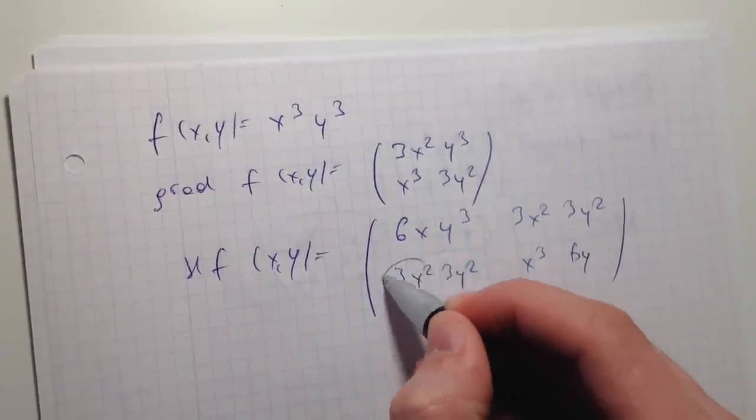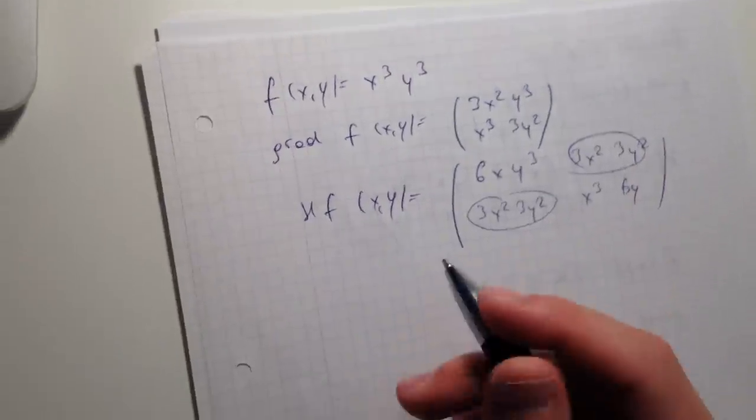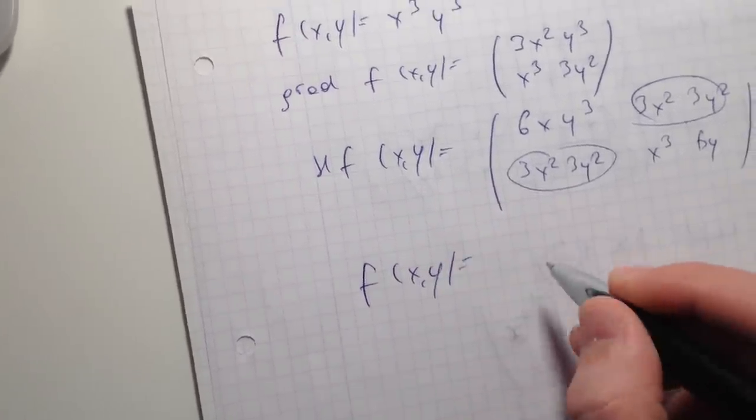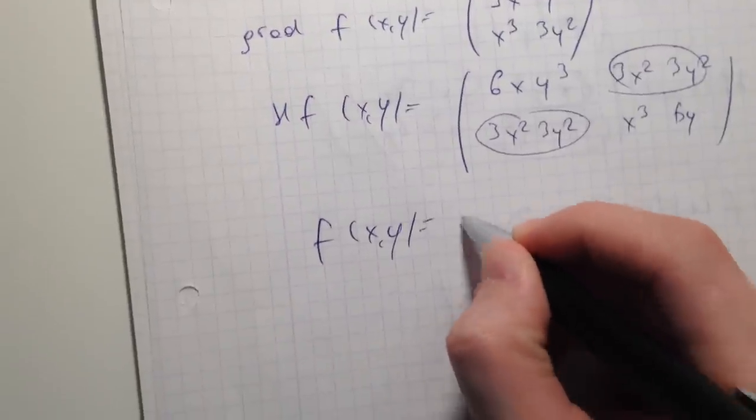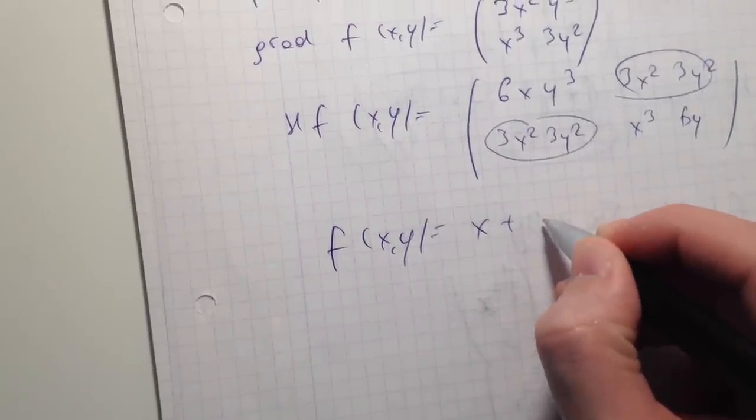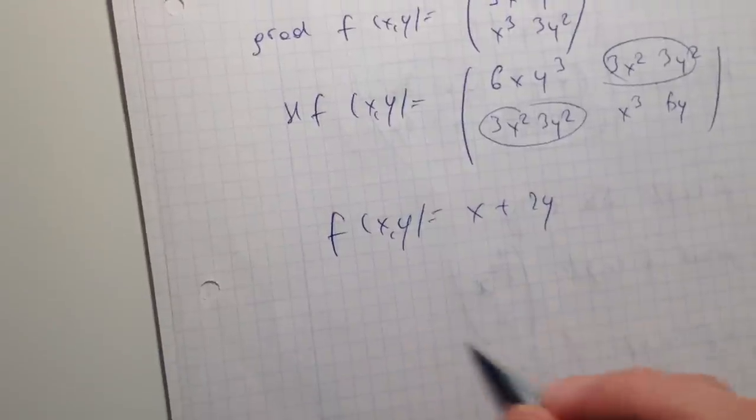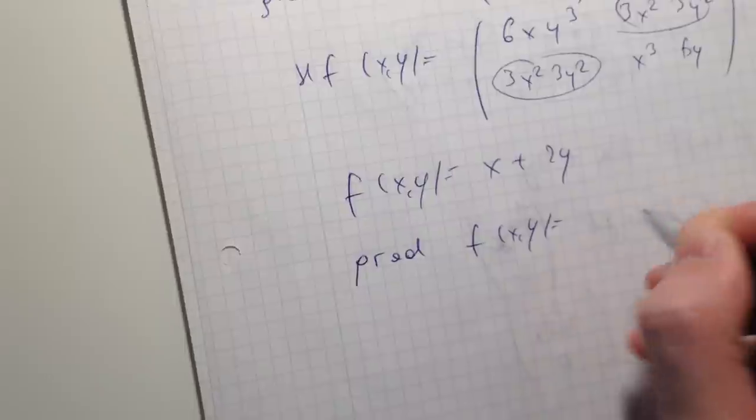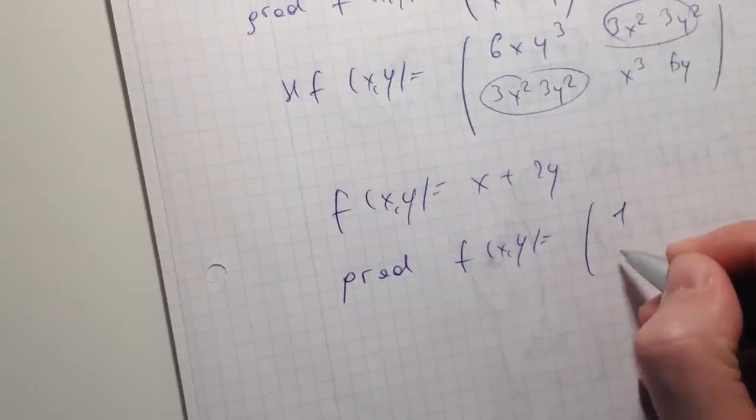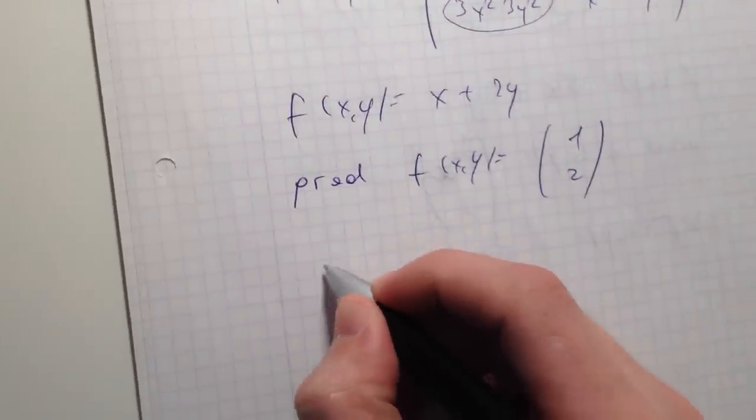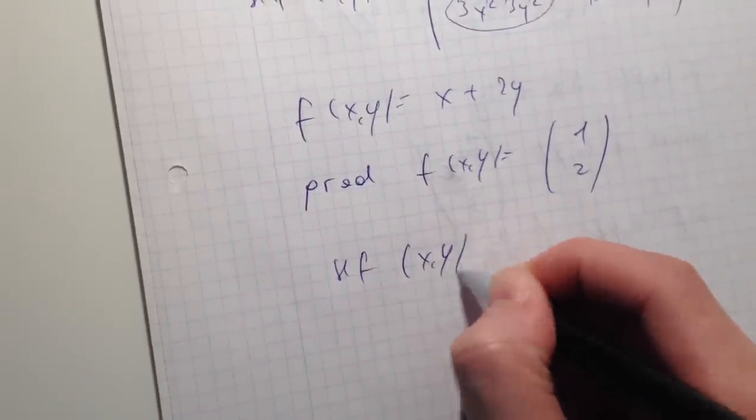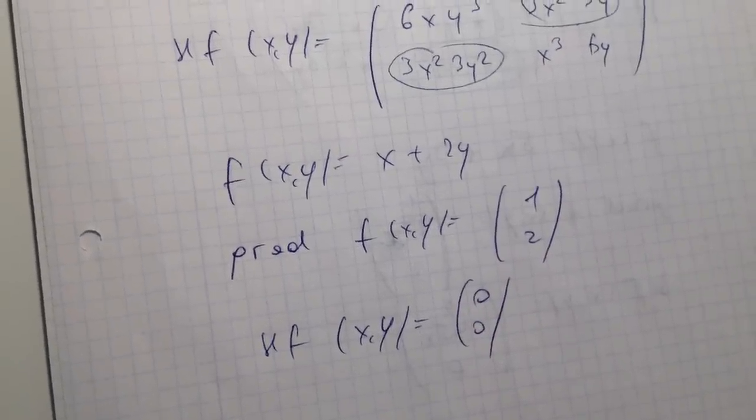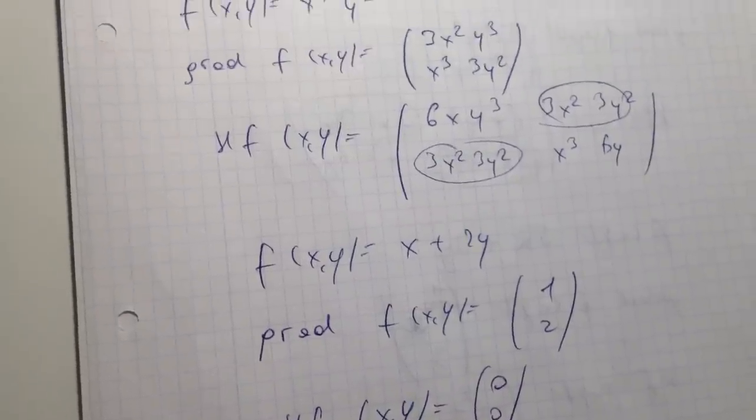So it means that everything done was done right. Now another example of a Hessian matrix: if you have the function, for example, x plus 2y, it's a very easy function but I'm going to show you this one. The gradient is going to be 1, 2. And if you want to find the Hessian matrix of this function, it's going to be 0, 0. So it's rather simple, but I just gave you two examples.